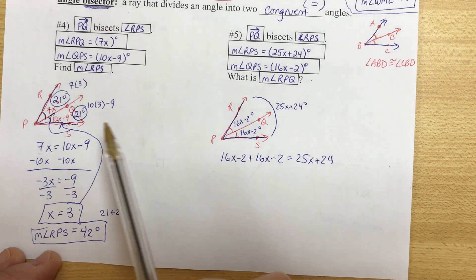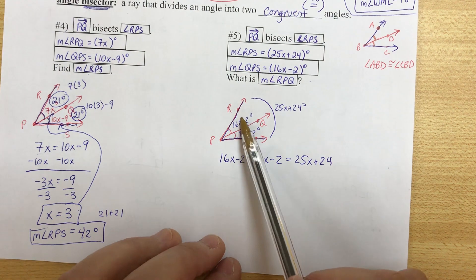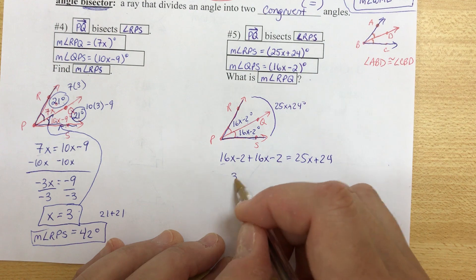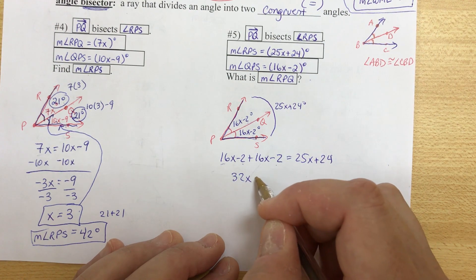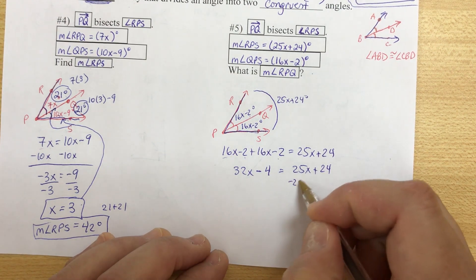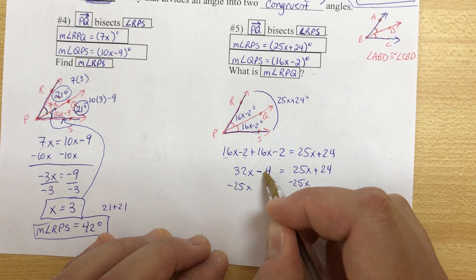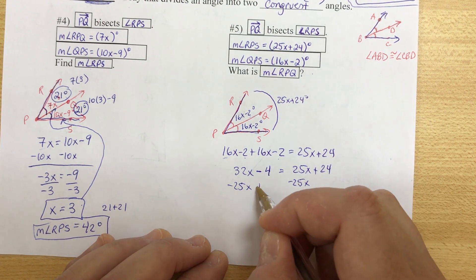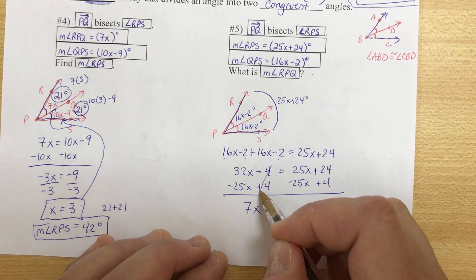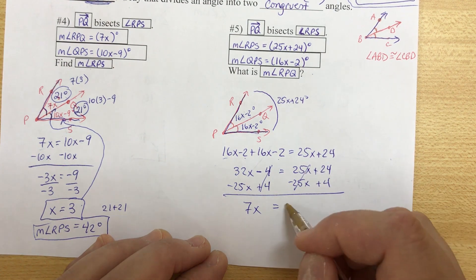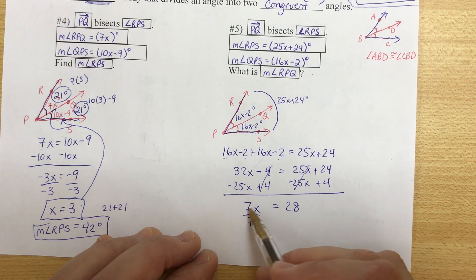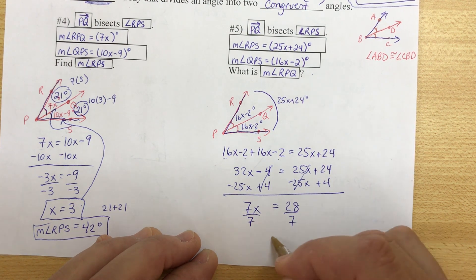So this time, we're not setting angles equal to each other. We're adding them up to get the big one, to get the whole thing. So we can combine like terms, 32x, negative 2 plus negative 2 is minus 4, equals 25x plus 24. I'm going to subtract 25x. And at the same time, let me move negative 4 to the right side by adding. So we get 7x equals 28. Now, last move is divide by 7, because we're going to undo multiplication. x is equal to 4.